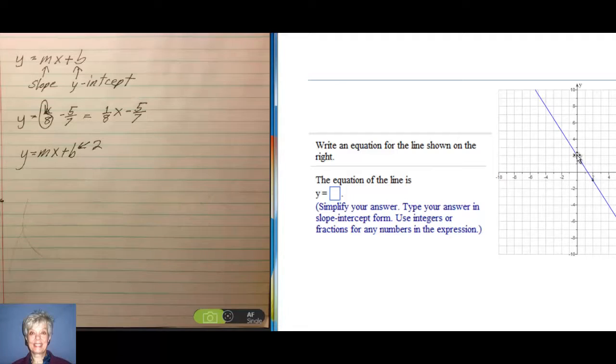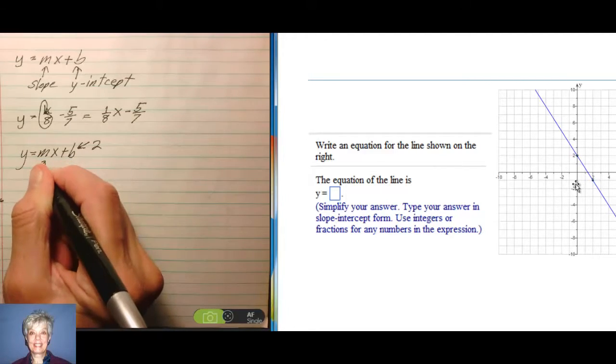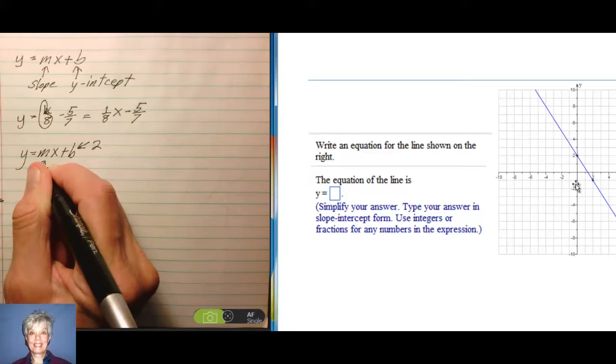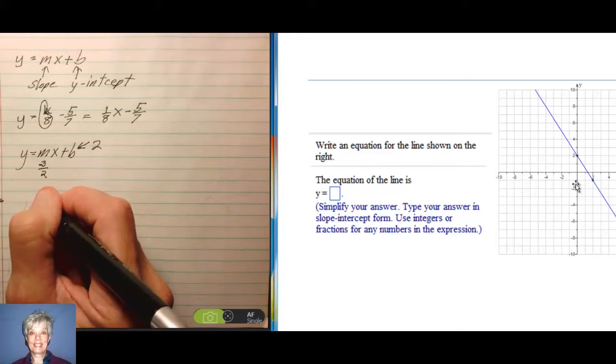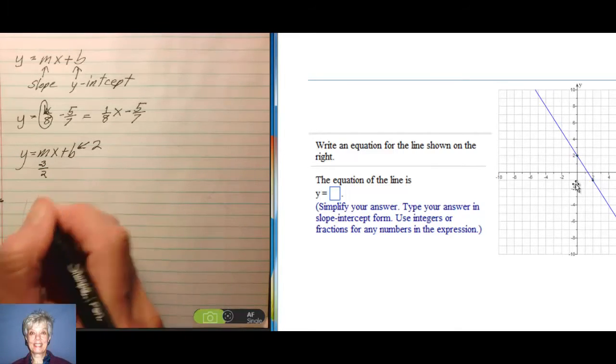You can see that it goes down 1, 2, 3 units, and then over 2 units. So we go down, our slope is going to be 3 down and 2 to the right, so that will be negative 3 over 2.